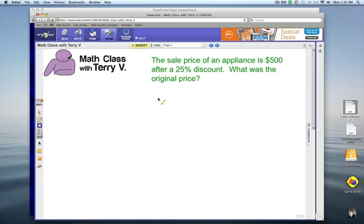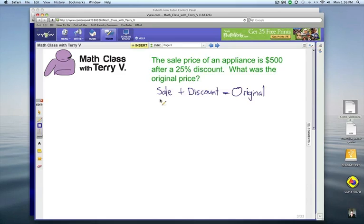Alright, here's my question. The sale price of an appliance is $500 after a 25% discount. What was the original price? So obviously the sale price is mentioned as $500. The discount amount, we don't know. The original price is what we're asking for.